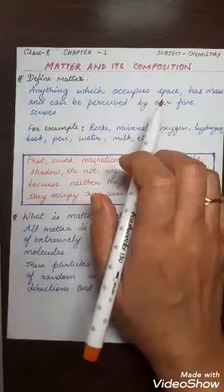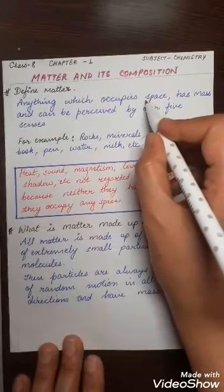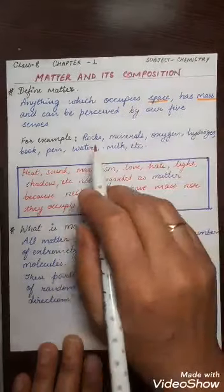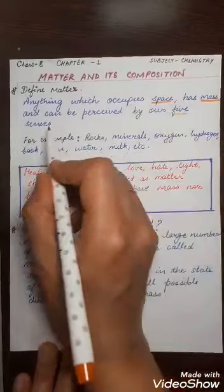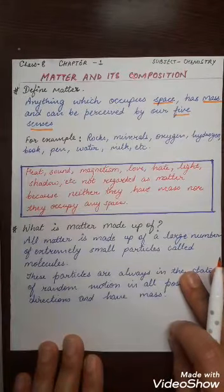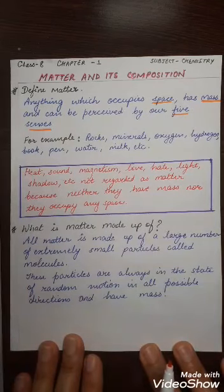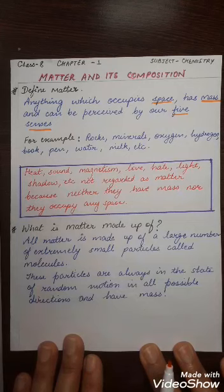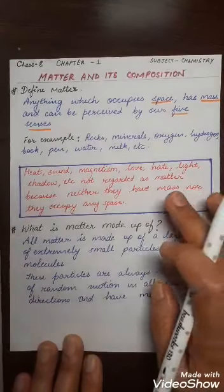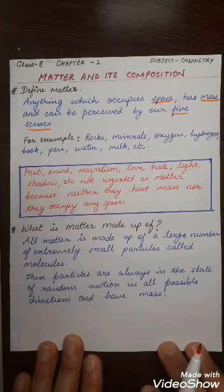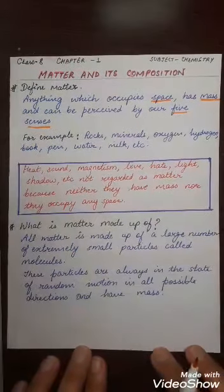Matter may be defined as anything which occupies space and has mass and can be perceived by our five senses. Energies like heat energy, sound energy, light energy, magnetism, and love, hate, shadow, etc., are not regarded as matter because neither they have mass nor they occupy any space.